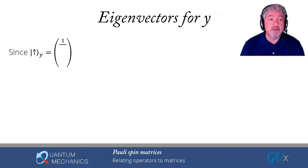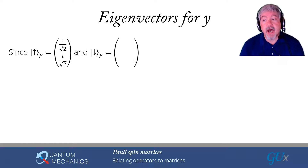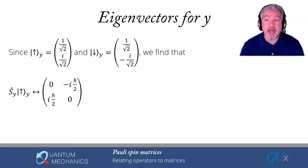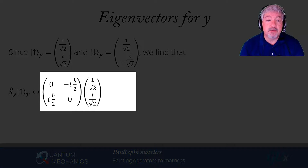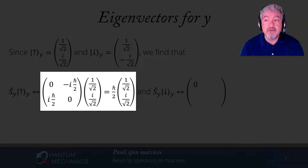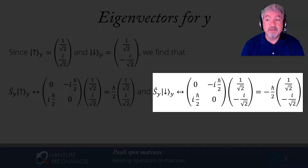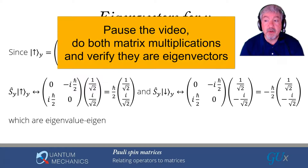Now let's look at how this works for Sy. We'll go a bit faster. The eigenvectors have an i in the second component — either +i or −i. The Sy matrix also contains i's. Please pause the video and go through this matrix multiplication to verify that in both cases you indeed get eigenvalue–eigenvector relationships for Sy.